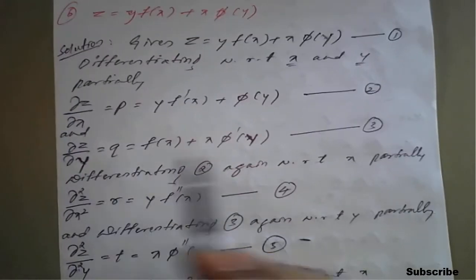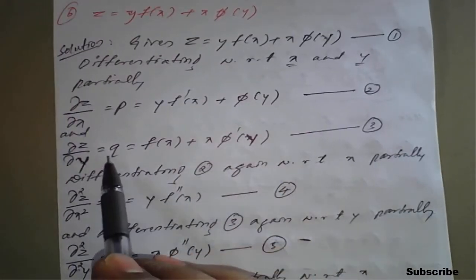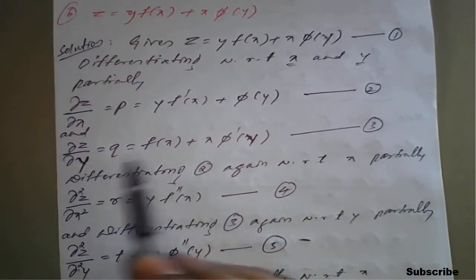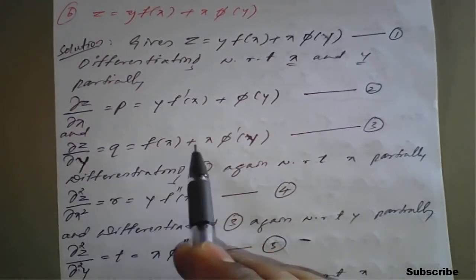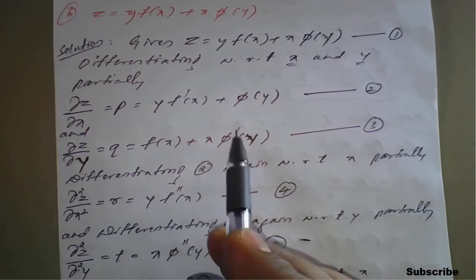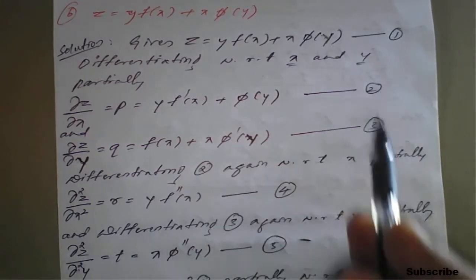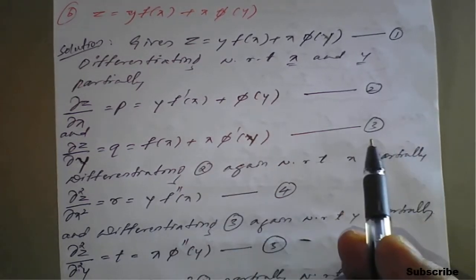Similarly, with respect to y we will get dou z by dou y, which is equal to q, times f of x plus x into phi dash of y — equation 3.